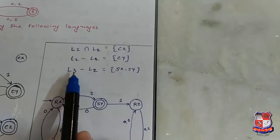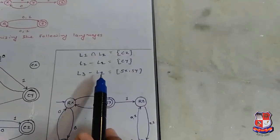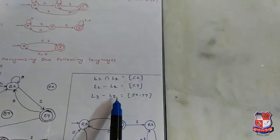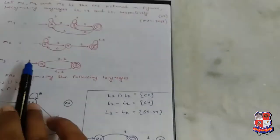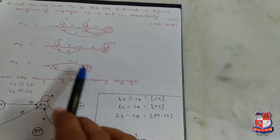If you use L3 minus L2, then you have to first take cross product of L3 and L2. The states are: R with X, S with X, R with Y.